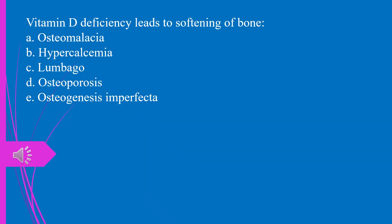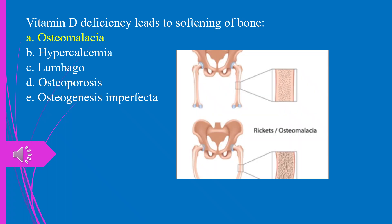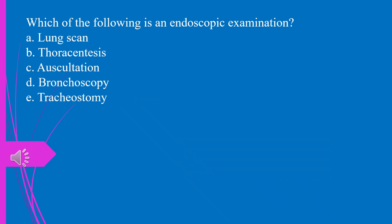Question 46. Vitamin D deficiency leads to softening of bone: a) osteomalacia, b) hypercalcemia, c) lumbago, d) osteoporosis, e) osteogenesis imperfecta. The answer is a, osteomalacia.